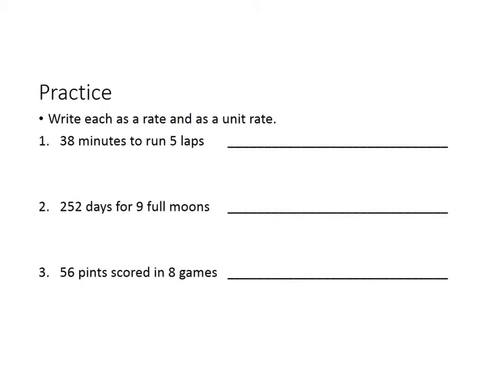Let's do some more practicing. For these, write each as a rate and as a unit rate. Number one is 38 minutes to run five laps. So the rate would be 38 minutes for five laps.